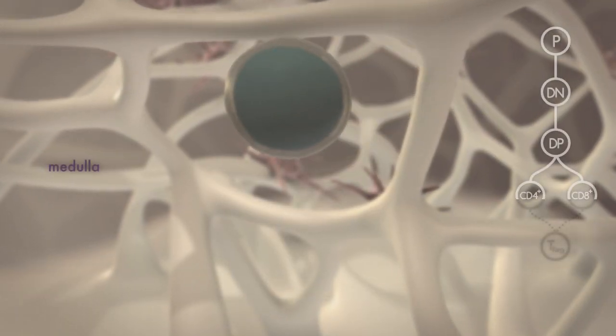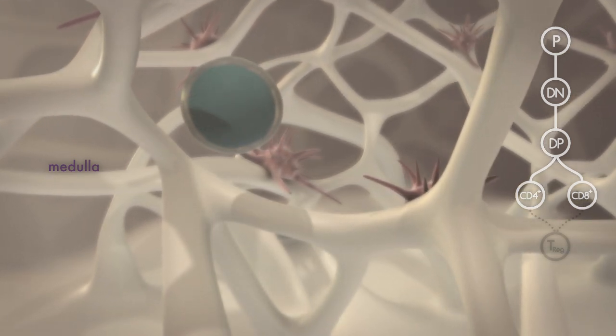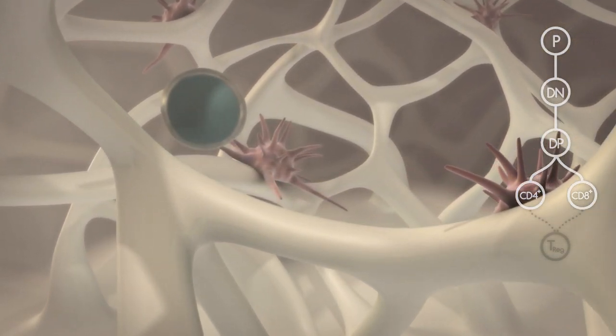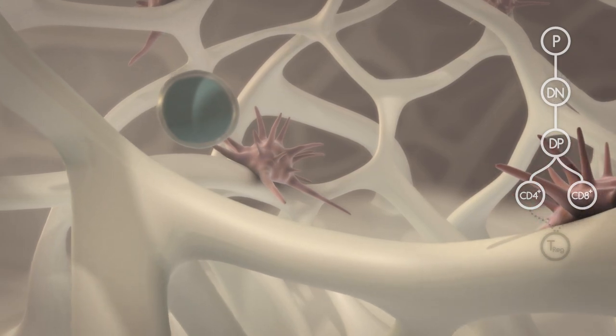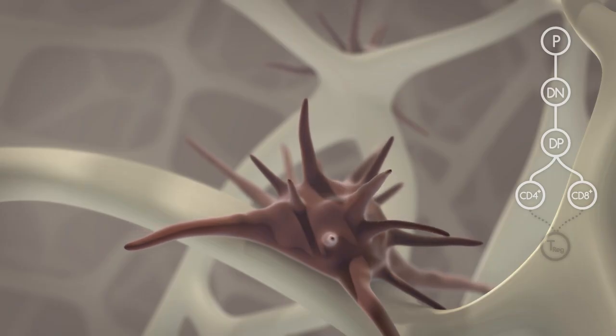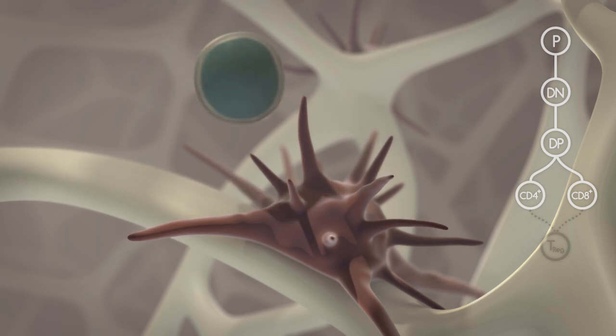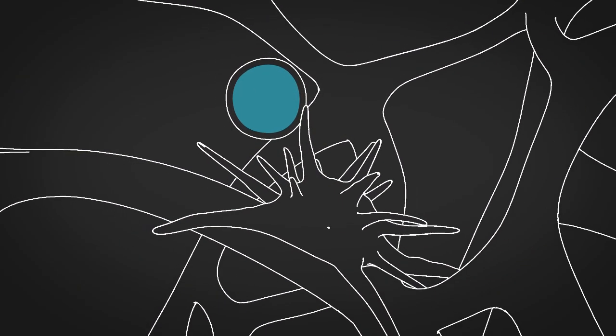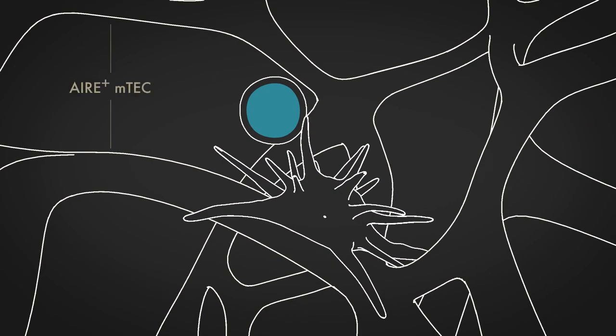SP thymocytes that have migrated to the medulla spend approximately 12 days there before being exported from the thymus. During this period, central tolerance takes place, and SP thymocytes are further selected by dendritic cells that promiscuously present self-antigens. These self-antigens are supplied by the ever-important AIRE-expressing medullary thymic epithelial cells.